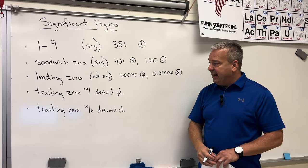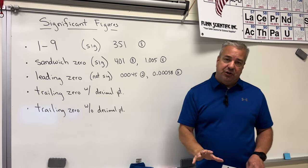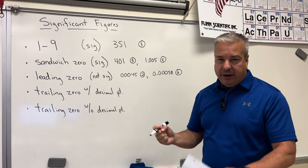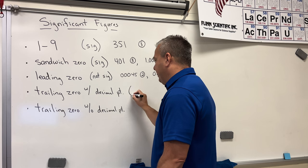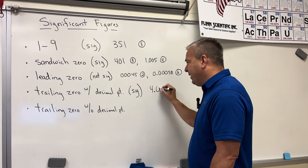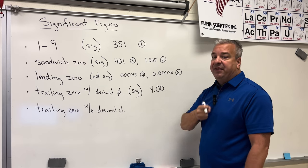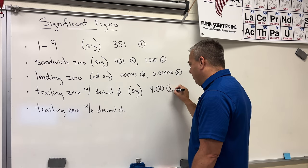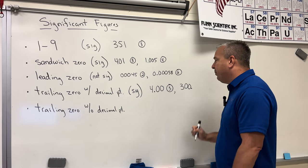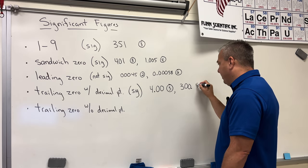That leads us to trailing zeros. We've talked about sandwich zeros and leading zeros; now we talk about trailing zeros. There are two categories: trailing zeros with a decimal point and trailing zeros without a decimal point — and they are very different. Trailing zeros with a decimal point are significant. So if I have 4.00, I have trailing zeros, I can physically see the decimal point, and they count as significant — so this number has three significant figures. Even 300. with a decimal point would also have three sig figs.